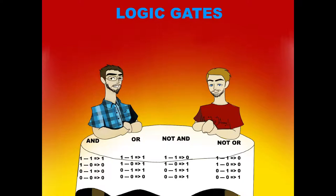Logic gates are basically what allows a computer to do math and pretty much anything. I want to focus on the most basic gates: the AND gates, the OR gates, and the NOT gates. There are technically four gates but they're pretty basic. The NOT gates can be the most confusing, but once you figure them out and really think about them, they become intuitive. Let's start with the AND gate.